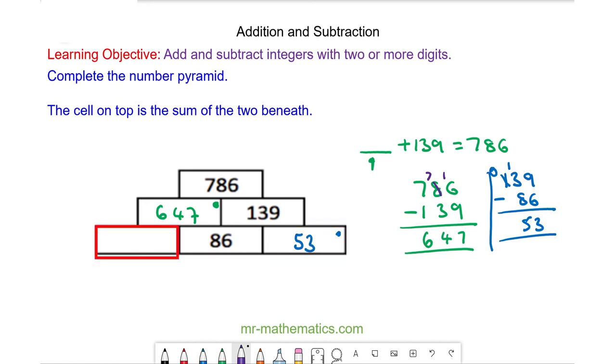And finally, this number here would be 647 minus 86. 7 take away 6 is 1. The 8 is bigger than 4, so I borrow 1 from the next column. 14 take away 8 is 6, and the hundreds digit is 5, so 561. Okay, thank you very much for watching. I hope you found this helpful.